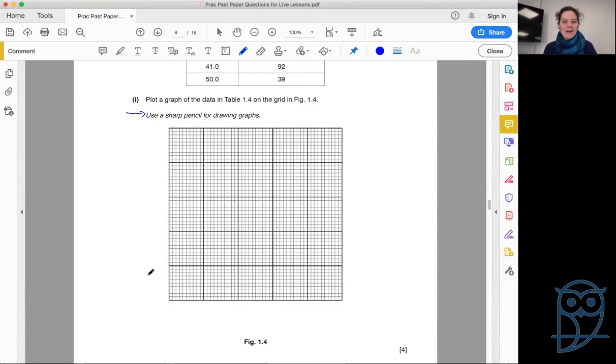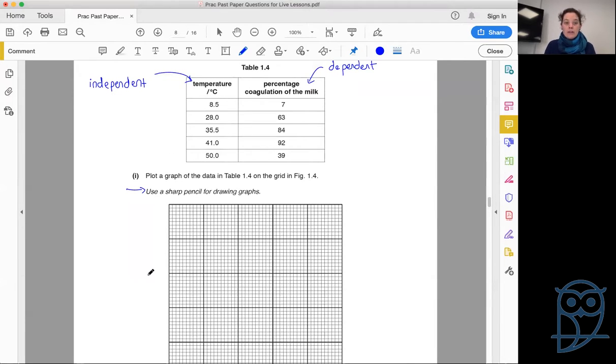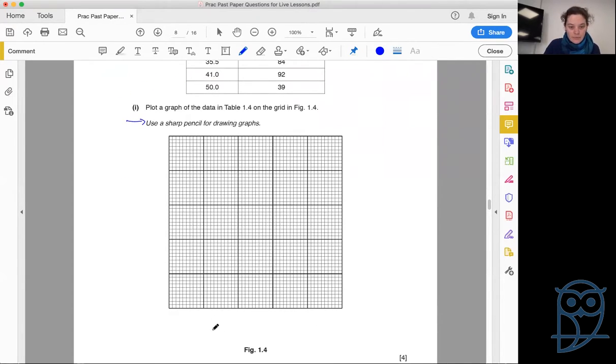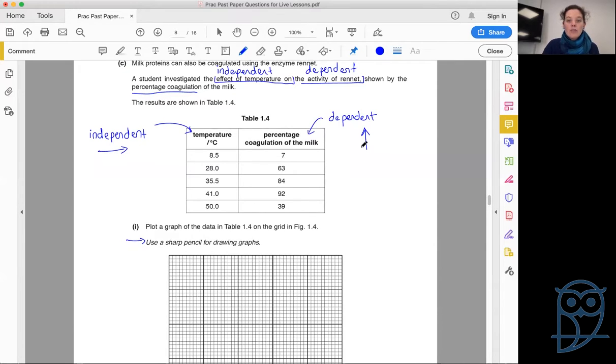Remember we always plot our independent variable on the horizontal axis, dependent variable on the vertical axis, because the dependent depends on the independent. We always use the headings exactly verbatim as they are in our table. The heading for our horizontal axis will be temperature slash degrees C. The heading for our vertical axis is percentage coagulation of the milk.